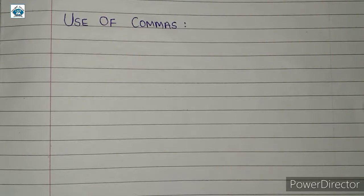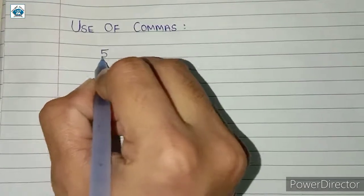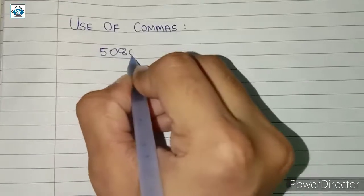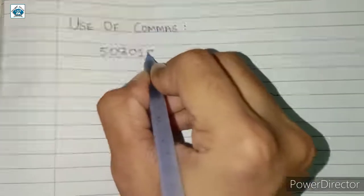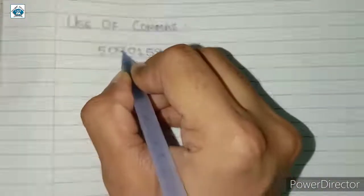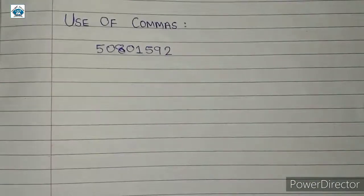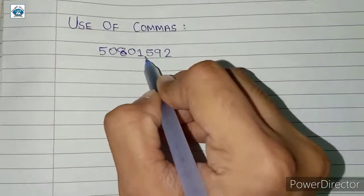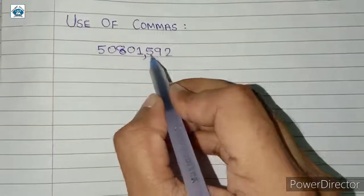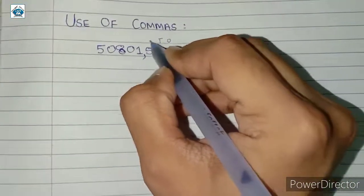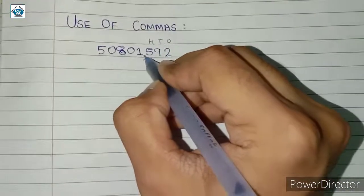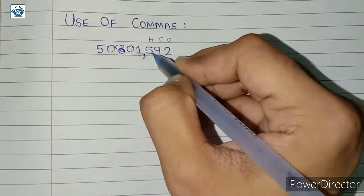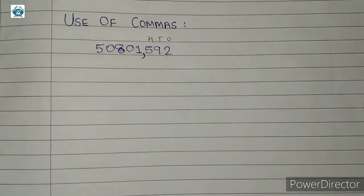We already discussed this in the previous class. So consider this number: 50801592. We need to add commas to this number. The first comma will come after the hundreds place, that is 3 digits from the right. So this is the ones place, this is the tens place, this is the hundreds place. After 3 digits we will put the first comma.